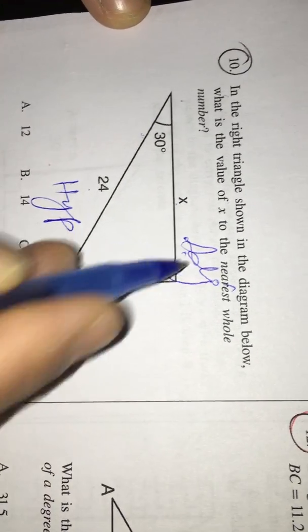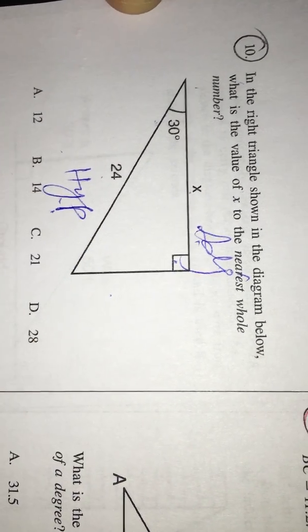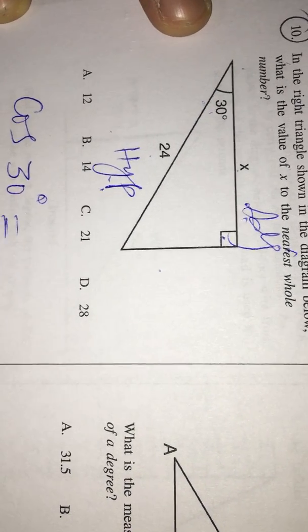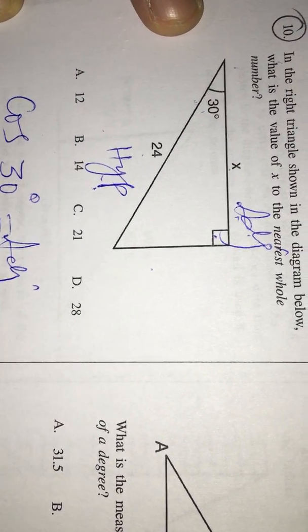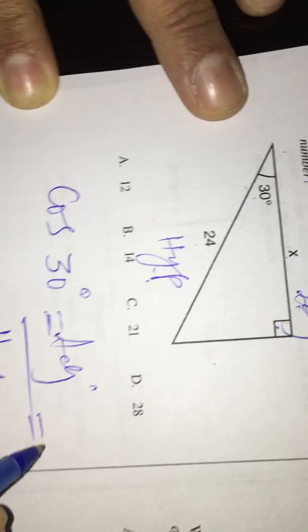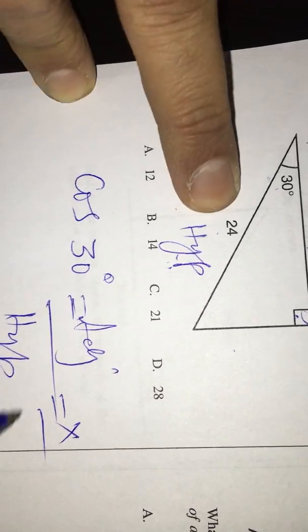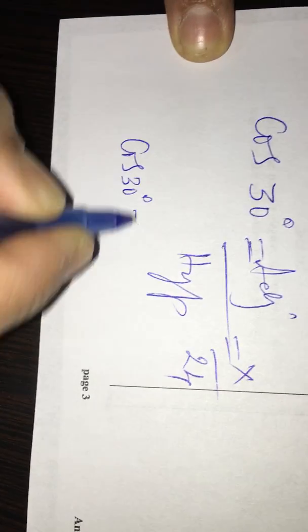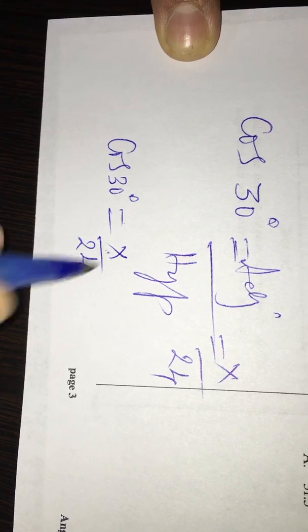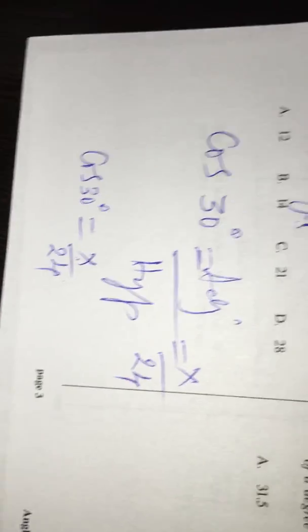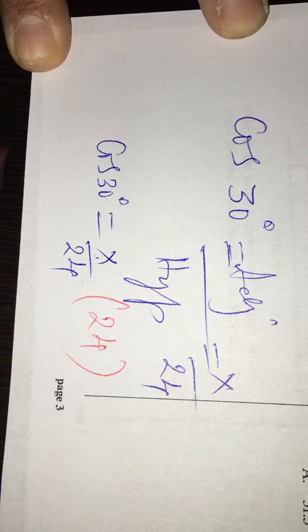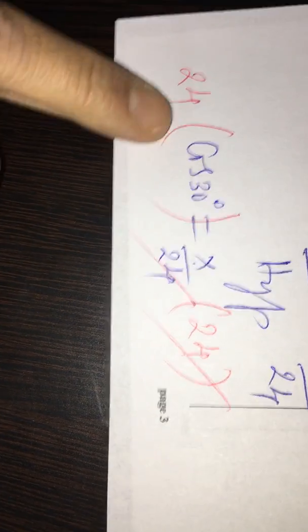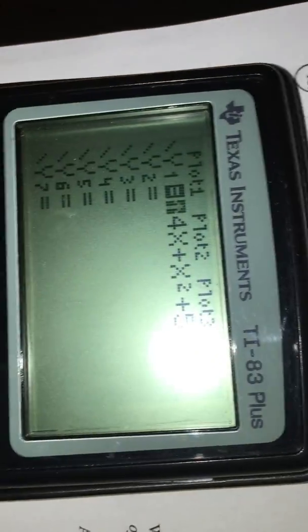So, we got adjacent side and hypotenuse. These two are connected by the trig ratio cosine. So, cos 30 degrees equals adjacent side over hypotenuse. But adjacent side is X and hypotenuse is 24. Therefore, cos 30 degrees equals X over 24. We have to find X value. So, I don't want this 24, so I am multiplying with 24 on both sides. Then this 24 and 24 gets cancelled. I use the calculator to do that multiplication.